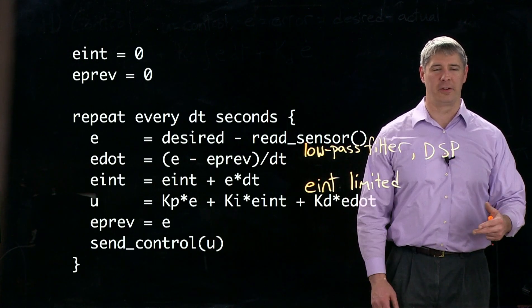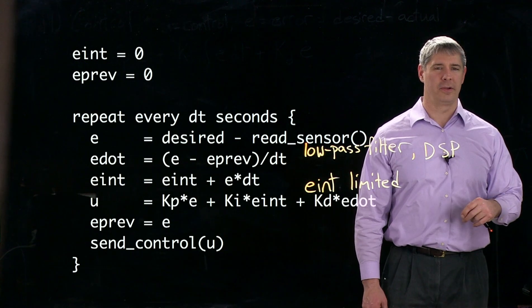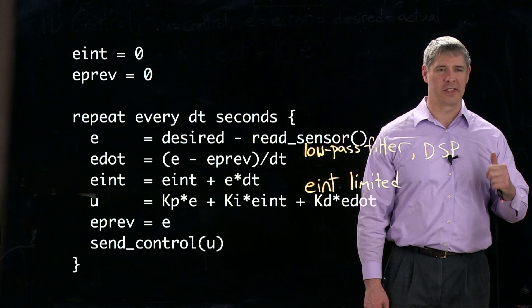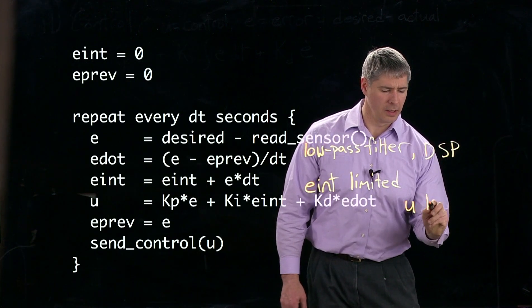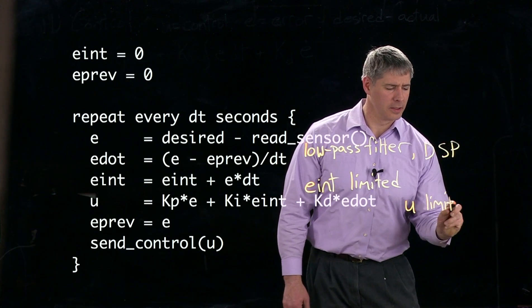So if we calculate u should be 100 newton meters, but the most we can get out of the motor is 5 newton meters, we're going to have to cap it before we send it to the motor controller. So we're going to want to limit u.